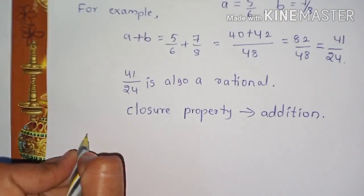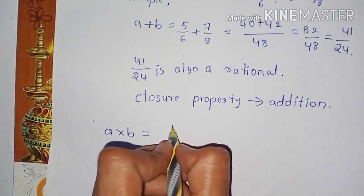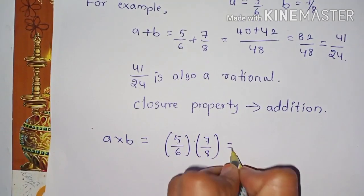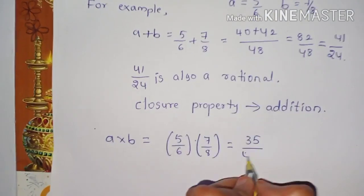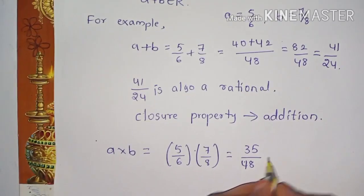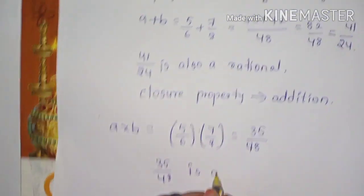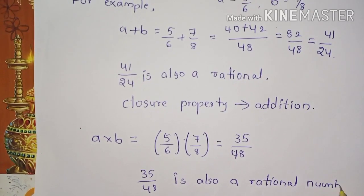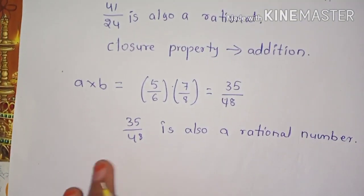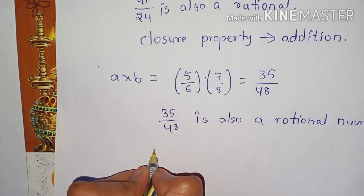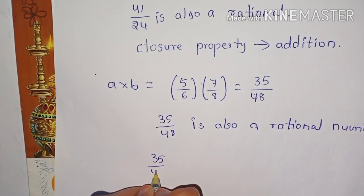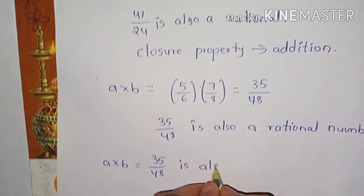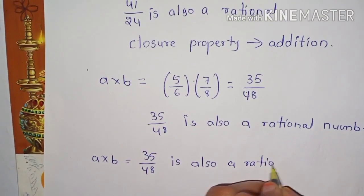Next, multiplication: A into B. Taking A equals 5/6 and B equals 7/8, so A×B equals (5×7)/(6×8) = 35/48. So 35/48 is also a rational number, satisfying closure property for multiplication.